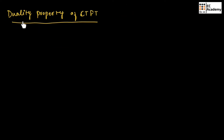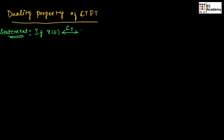In this lecture, let us understand the duality property of continuous time Fourier transform. Let us write this statement. It states that if X(t), for which we perform Fourier transform, we will obtain X(jω). Then for X(jt), if we perform Fourier transform, we should obtain 2π X(-ω).